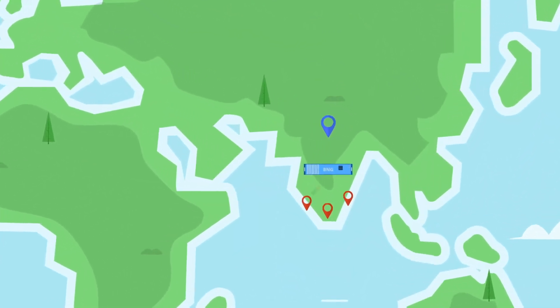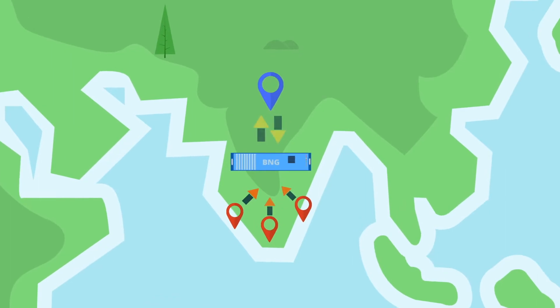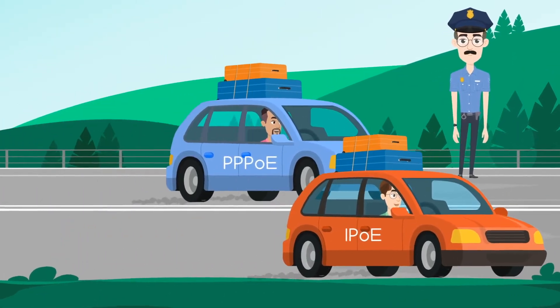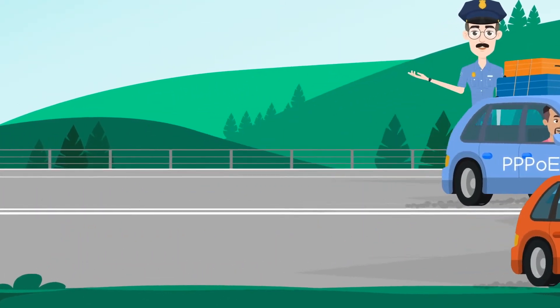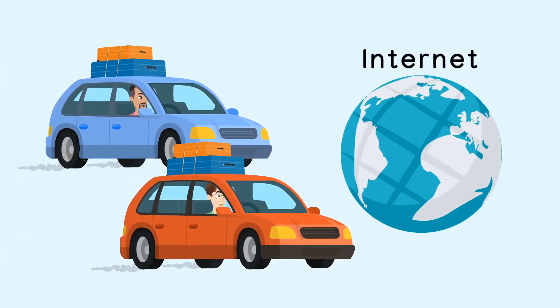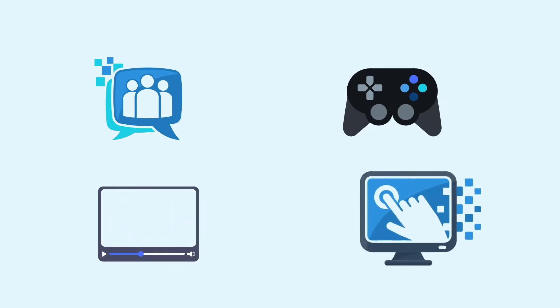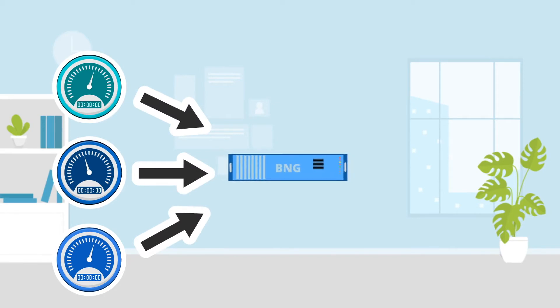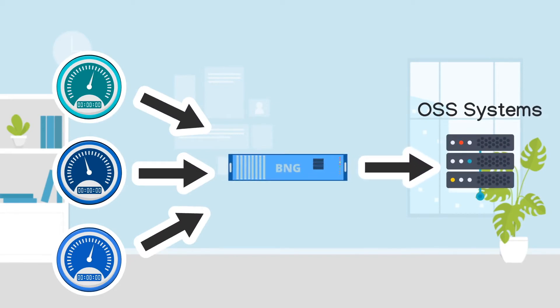A BNG, or a broadband network gateway, acts as the access point for subscribers to connect to the broadband network. BNG authenticates its subscribers connecting over PPPoE or IPoE, then authorizes them to establish subscriber sessions so that they can connect to the internet, where they access various services such as social media, gaming, watching movies, or connecting to their office VPN. During this time, BNG will be sending the subscribers' usage accounting information to the OSS system.